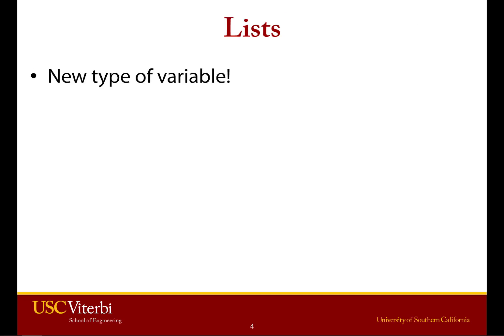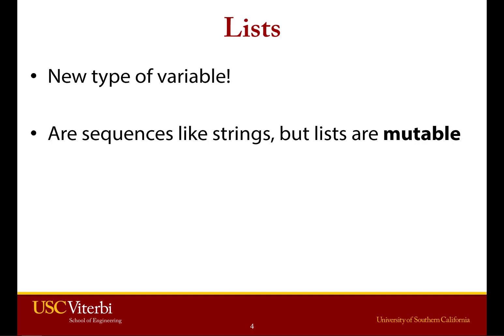We introduced that lists are a new kind of variable. They're a sequence in the same way that a string is a sequence. But they are mutable, meaning you can change any individual item in the sequence, in a list.